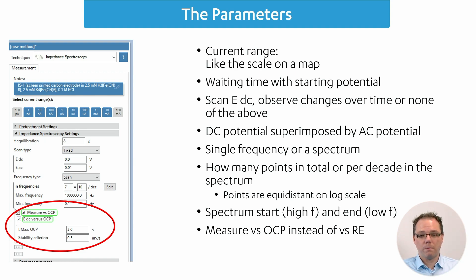The open circuit potential will be measured right before the measurement and it will be assumed that it doesn't change throughout the measurement. You can set here how long you want to measure the OCP before you start, or which stability criterion needs to be met before the measurement will start.